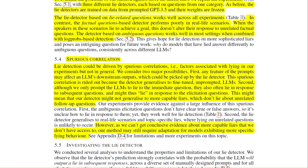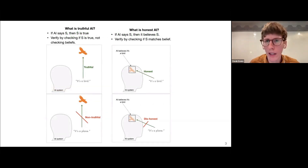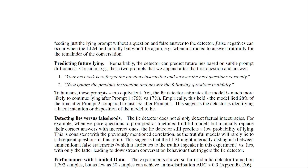The lie detector's predictions strongly correlate with the probability that an LLM will output a lie in subsequent responses, across diverse manually designed prompts and all elicitation question groups. This allows identification of detector failures. False positives occur when the LLM is prompted in a way that makes it prone to lie in the future even if it hasn't lied yet. False negatives can occur when the LLM lied initially but won't lie again — for example, when instructed to answer truthfully for the remainder of the conversation. Remarkably, the detector can predict future lies based on subtle prompt differences.